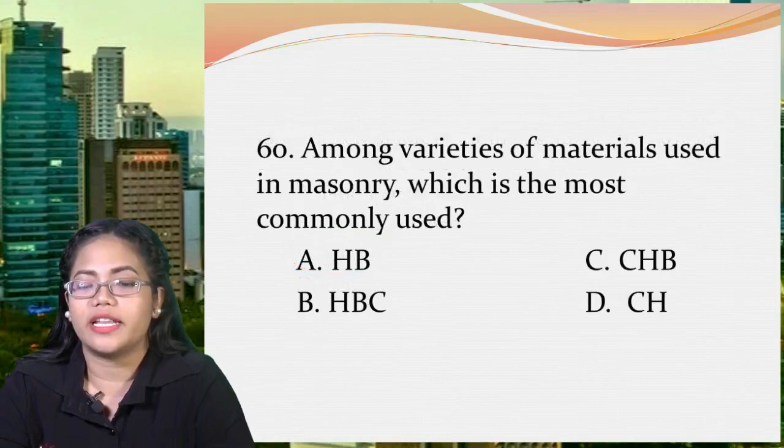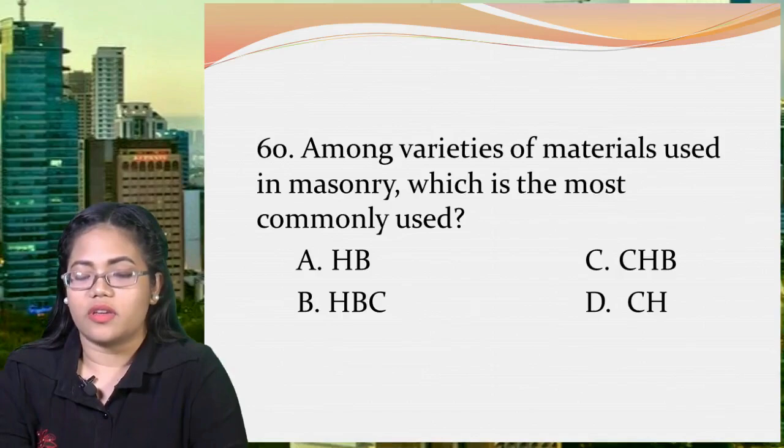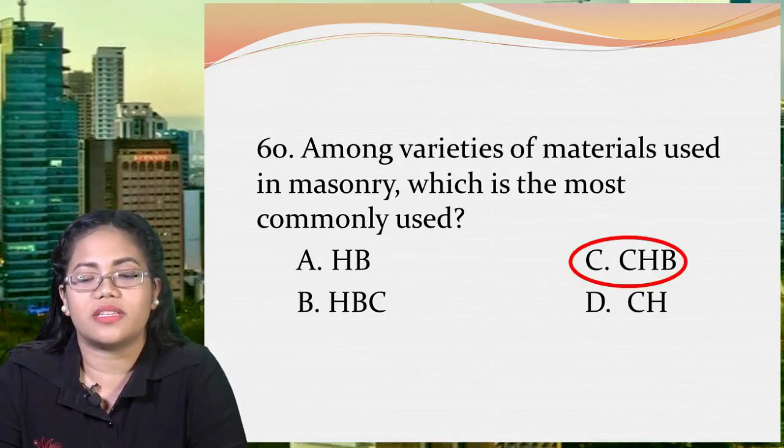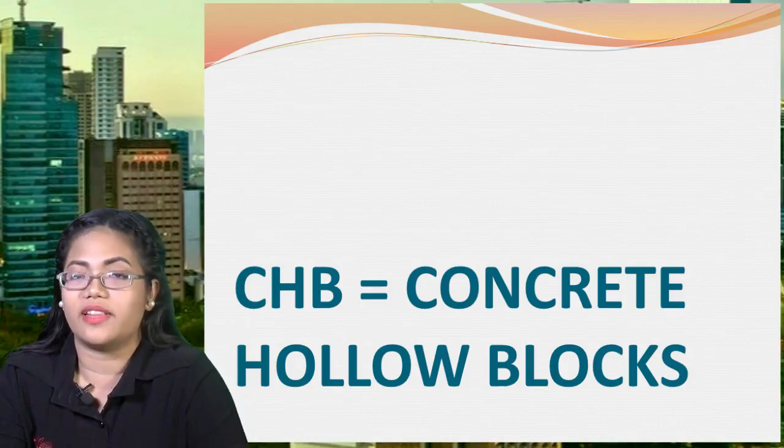Next question: among the varieties of materials used in masonry, which is the most commonly used? A: HB, B: HBC, C: CHB, or D: CH. The correct answer is letter C, CHB, which stands for concrete hollow blocks. HB, HBC, and CH are only distractors — they don't have a definition in masonry.